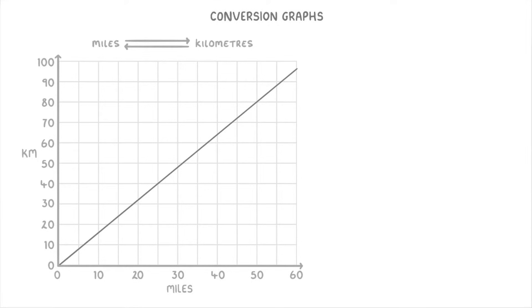The main use of graphs like this is to help us convert between the units. For example, let's imagine that we were asked how many kilometers are there in 30 miles. To answer this, the first thing we need to do is find 30 miles on our x-axis.